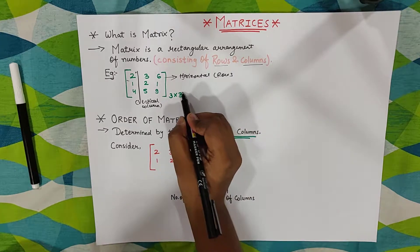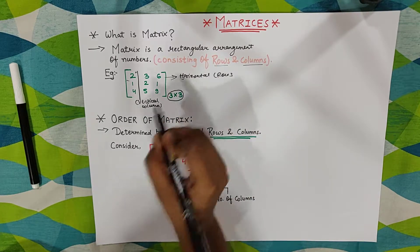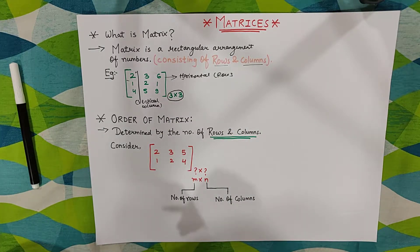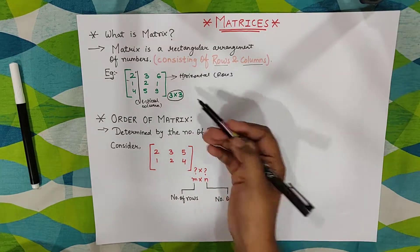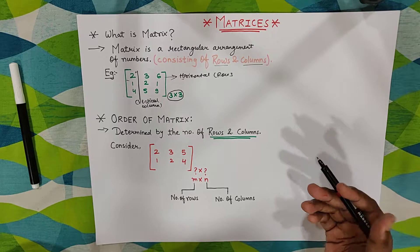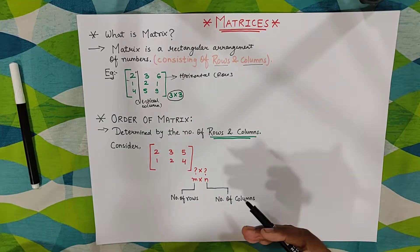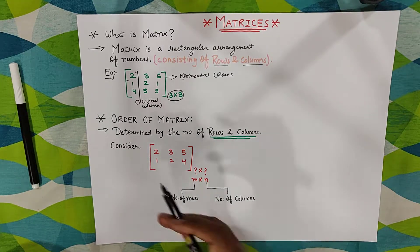Now guys, you will see this thing. Here you have written something 3x3. What is this? You might be confused. Why it is written over here? So guys, let me come to another point, and that is order of matrix.